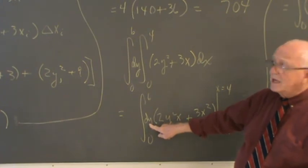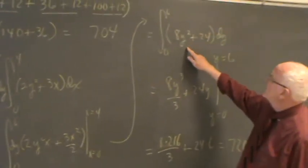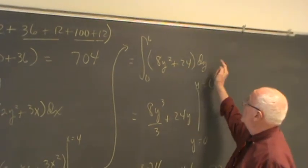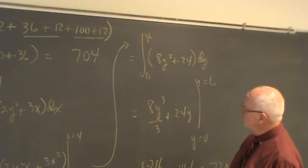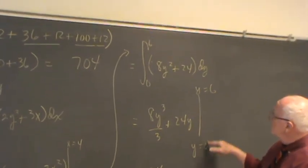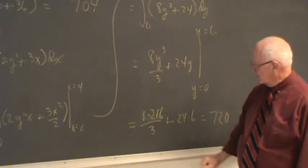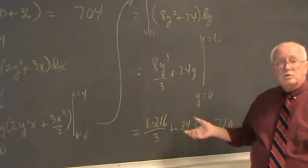Make sure you have your dy's and your dx's in here. So this leads me to an integral of 0 to 6 of 8y squared plus 24 with respect to y, which gives me 8y cubed over 3 plus 24y, going from y equals 0 to y equals 6, which is 8 times 216 over 3 plus 24 times 6, which is 720.